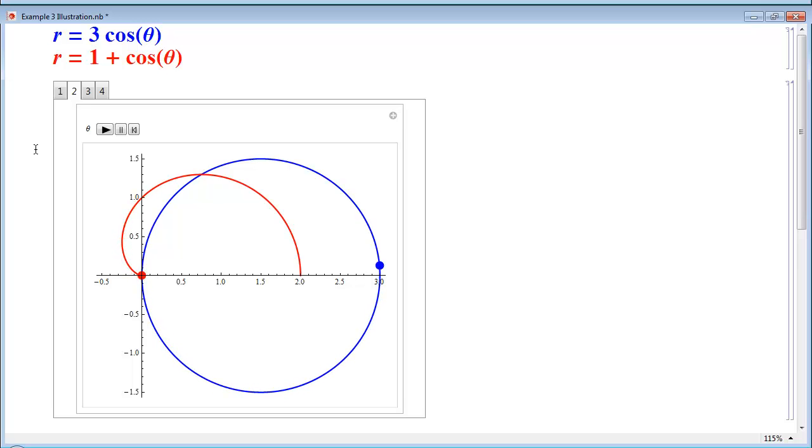With the blue graph, the circle, r equals 3 cosine theta, it crosses the origin when theta equals pi over 2 and 3 pi over 2. For the red graph, it crosses at pi, and it only hits it once. So for different values of theta, we have the same r.